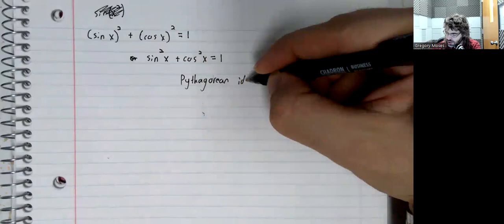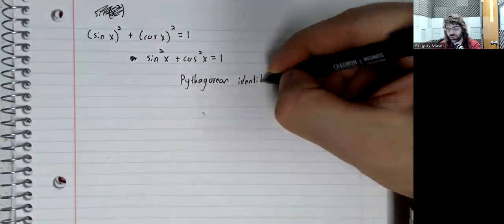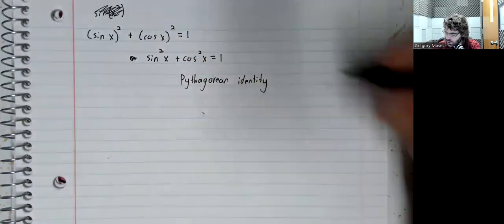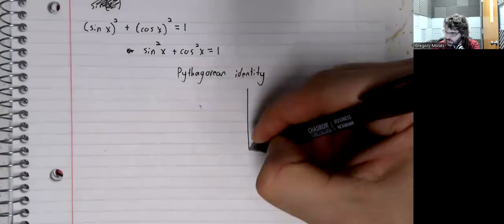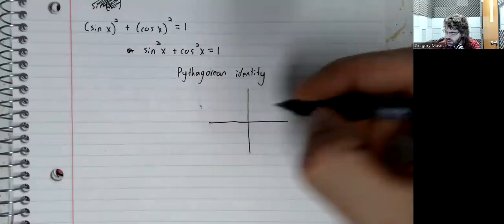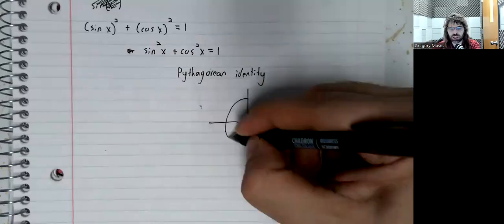Pythagorean is a word you've heard before. The Pythagorean identity comes right from the Pythagorean theorem.